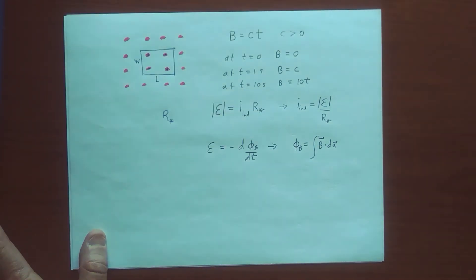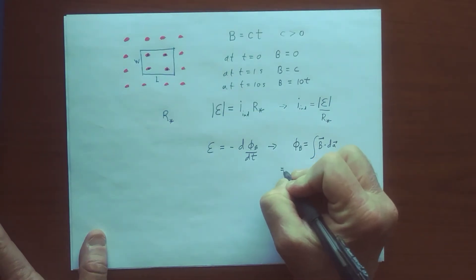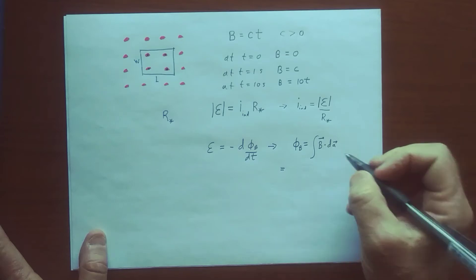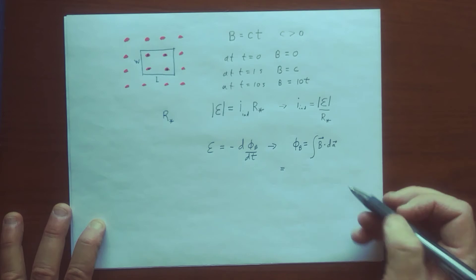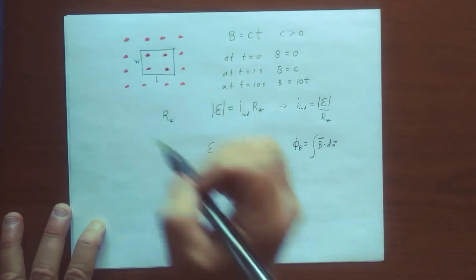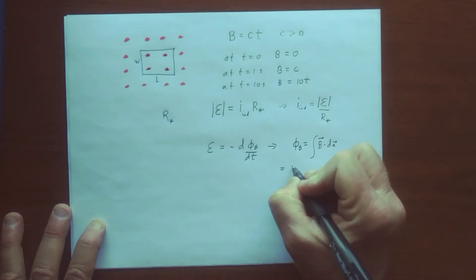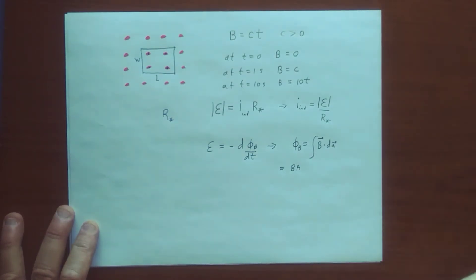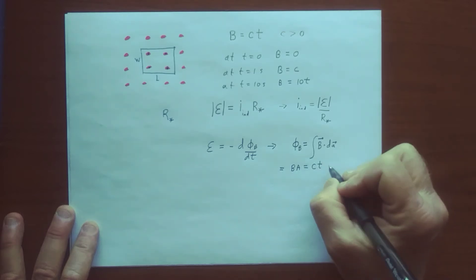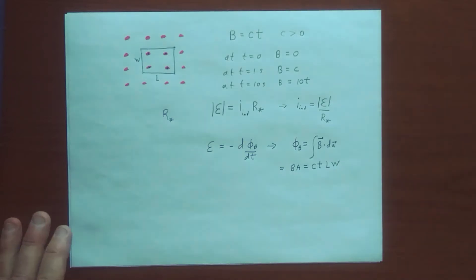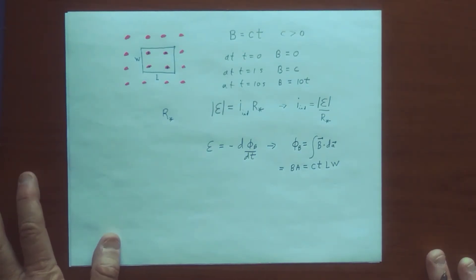Therefore, we get that the magnetic flux is just the constant value of the magnetic field, which at any moment in time is just some fixed value everywhere. So it's constant over space. And this just becomes the magnetic field times the area, the magnitude of the field times the area, which here becomes C times T times the area, which is L times W. So the magnetic flux is increasing in time.